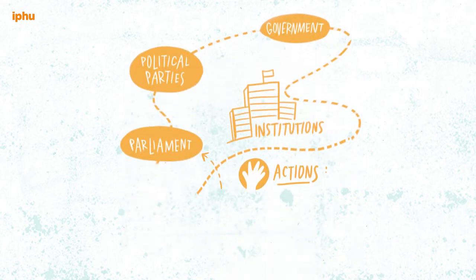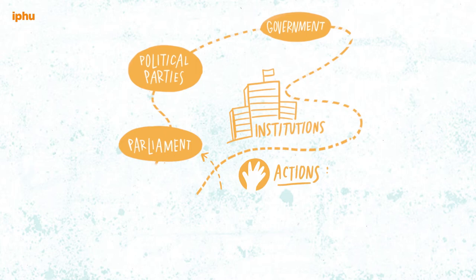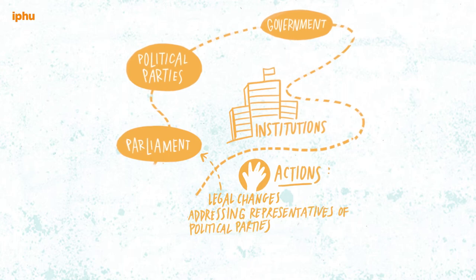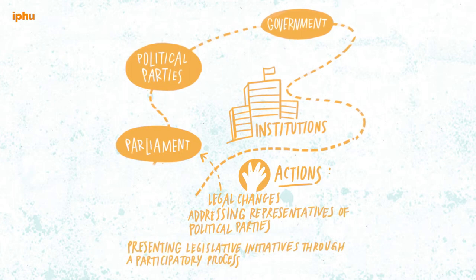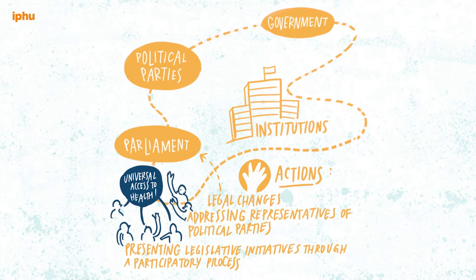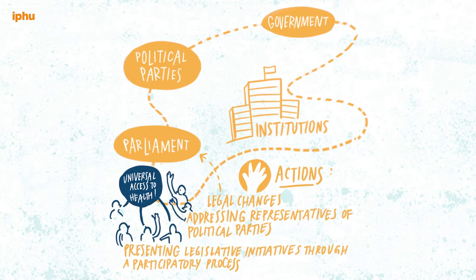Having groups of actors in a conceptual map allows us to better understand and analyze our needs and see possible action. We are going to analyze in depth how we can work with each of these groups. When willing to achieve a change of policies, legal changes, or government support, institutions are our final target. Legal changes are worked in the parliament, so we may want to influence it through addressing specific parties, participating in special commissions, or presenting legislative initiatives — for example, a law to guarantee universal access to healthcare or transparency in public-private partnerships.